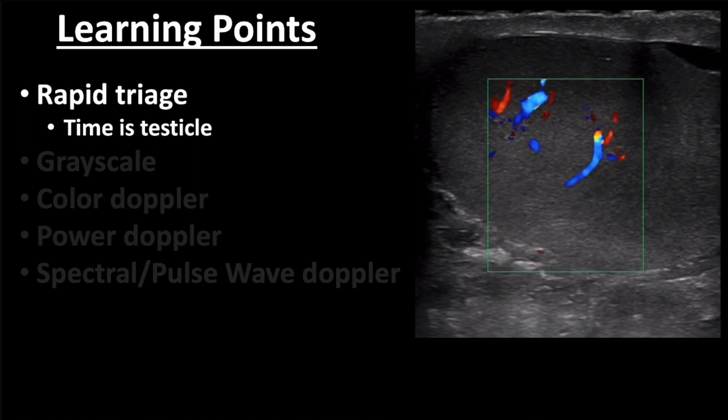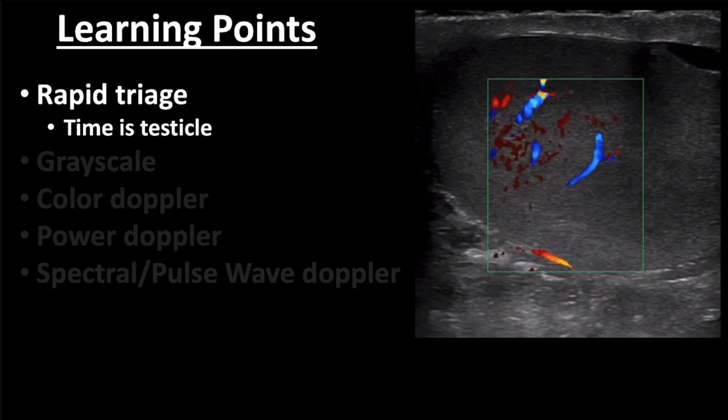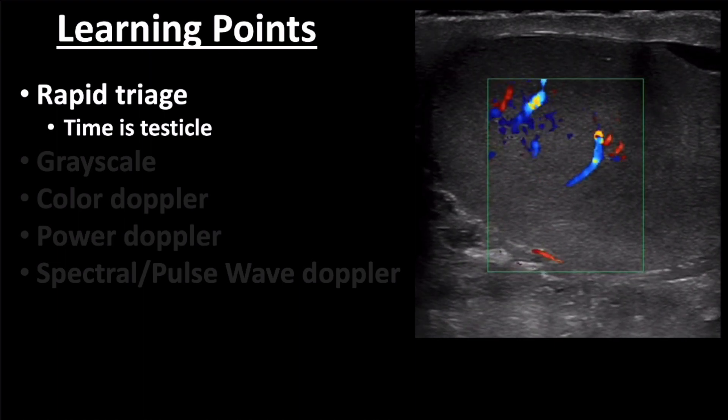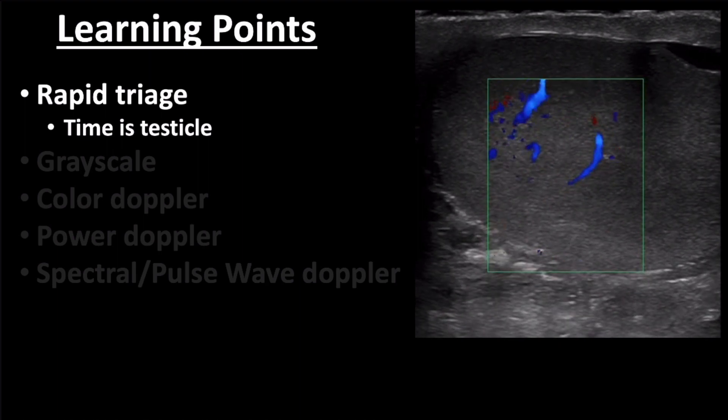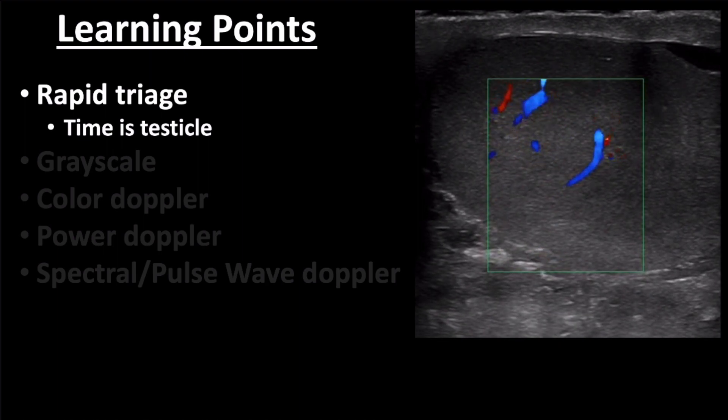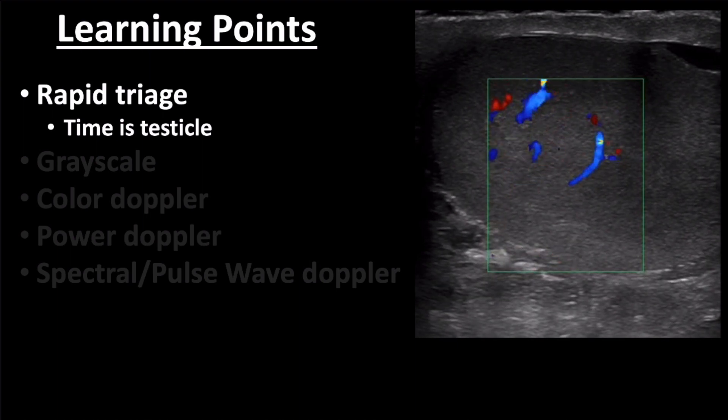I will admit that the evaluation of flow to rule out torsion is slightly more complex than presented here, yet the images I have shown are easily obtainable and interpretable for even the novice sonographer. Just keep in mind that a definitive diagnosis or rule out requires a more in-depth study, which I'll touch on briefly in a second.